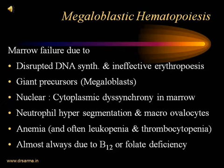Neutrophil hypersegmentation is another feature: normally neutrophils have 3, 4, or 5 lobes; in megaloblastic anemia due to B12 or folate deficiency, neutrophils have hypersegmentation — 5, 6, 7, 8 lobes. The macrocytes are not only round — some are oval (macro-ovalocytes). Anemia is often associated with leukopenia and thrombocytopenia also, because B12 and folic acid are also required for the maturation of the leukocyte and platelet series. So it is somewhat like a pancytopenia — anemia, leukopenia, and thrombocytopenia. Almost always, megaloblastic macrocytic anemia is due to folate deficiency or vitamin B12 deficiency.